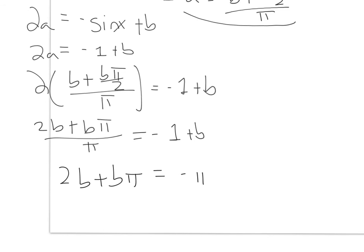Giving me 2b plus b pi, equals negative pi, plus b pi. And now I notice I have b pi on both sides, so they cancel. So I have b equals negative pi over 2.